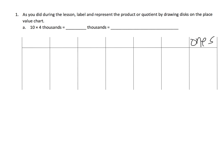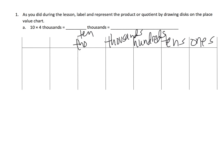So the first thing we're going to do is fill in the labels: ones, tens, hundreds, thousands, and ten thousands — that's going to be enough. The first problem is ten times four thousands. So we're going to take four thousands and model that in our place value chart. We put one, two, three, four dots. And then because we're going to have ten times that, we need to have ten rows of this.